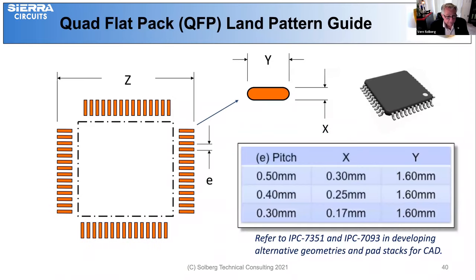Quad flat packs with the fine pitch lead frame are difficult on flex, but on rigid sections this geometry works pretty well — very similar to what you'd find in the IPC standard. This shows 0.5, 0.4, and 0.3 mm pitch, which are the primary standards called fine pitch, though compared to some products seen today they're just average.